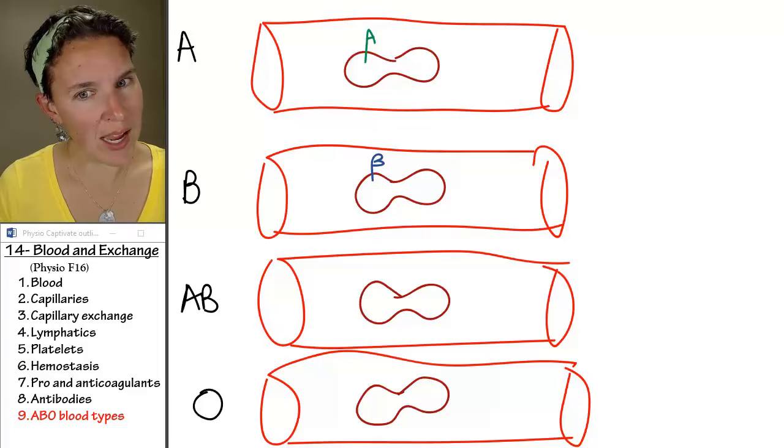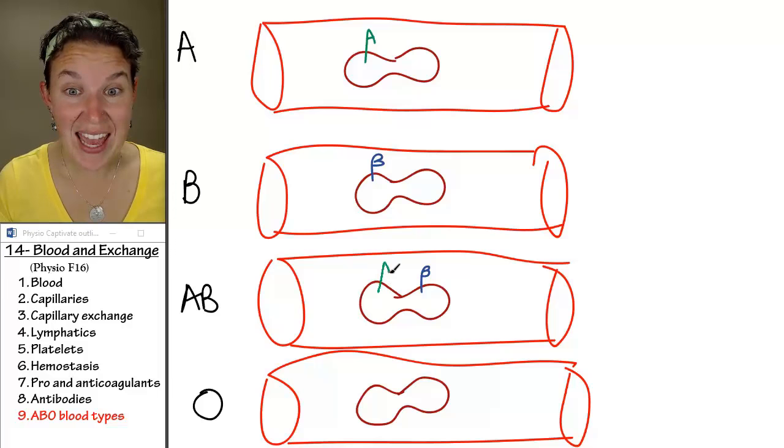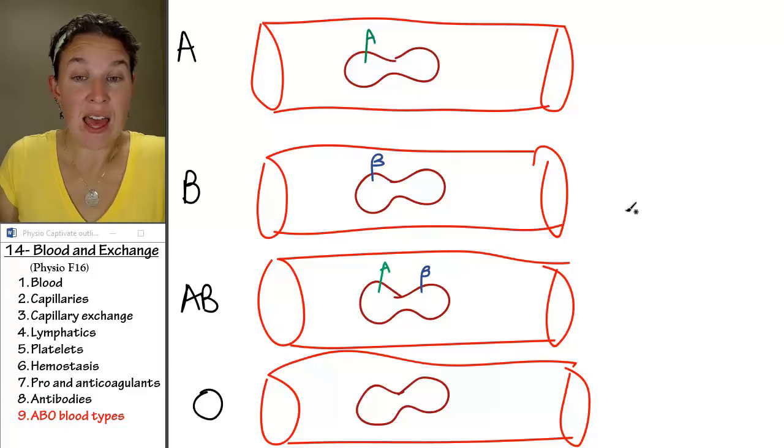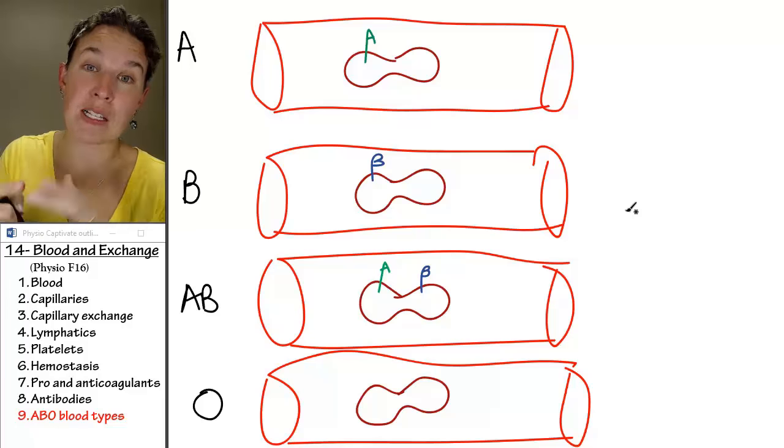What kind of antigen are you going to expect in AB blood? The red blood cells have B antigens and A antigens. They have genetics that produce both of those possible markers.